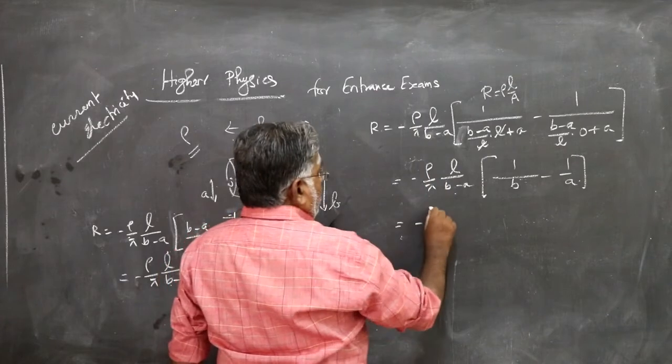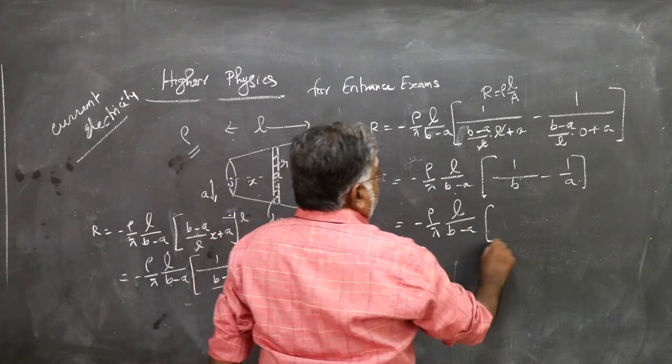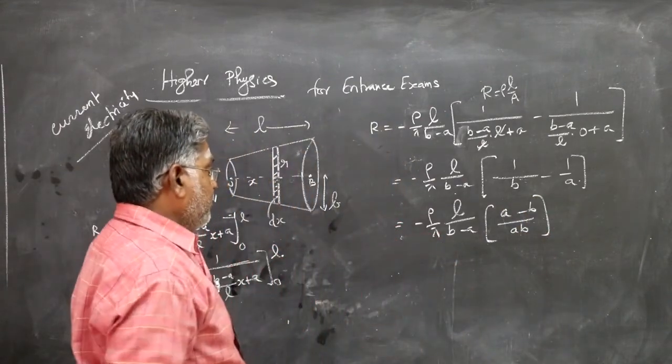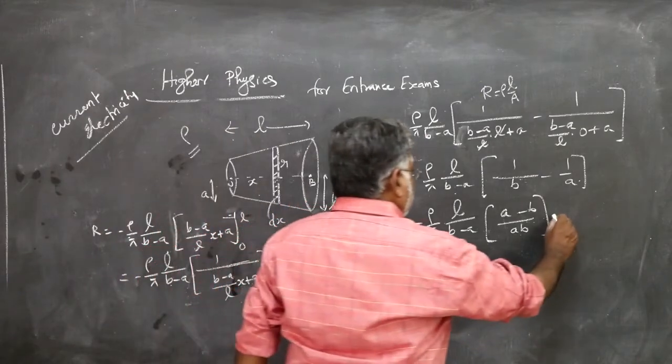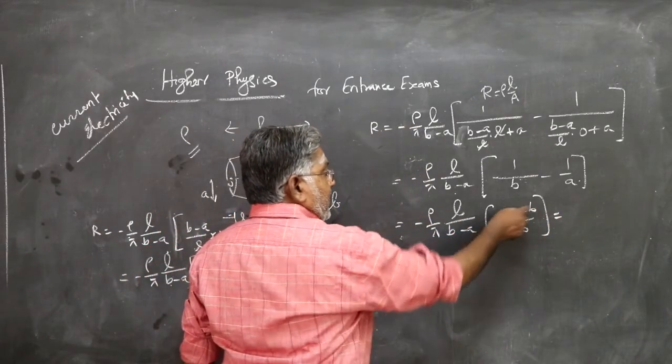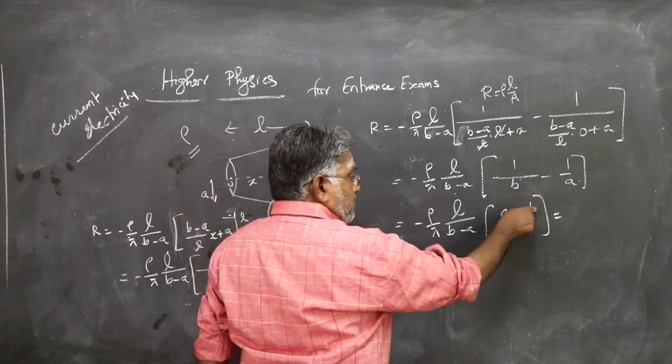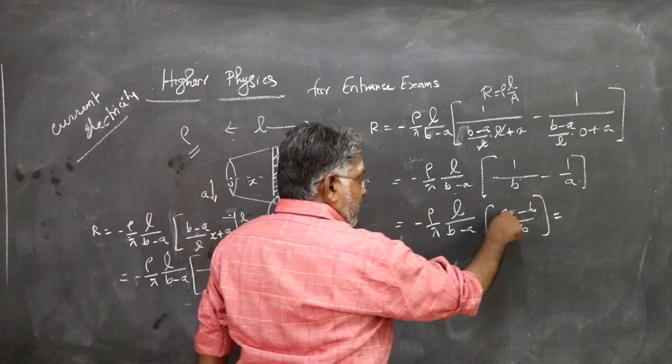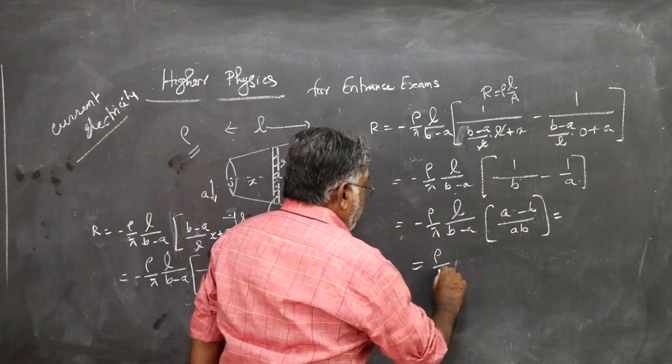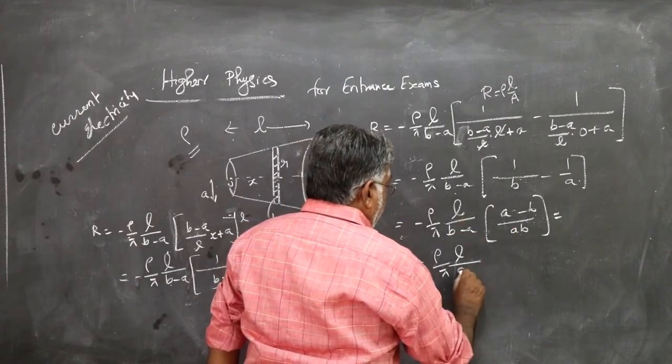Therefore, minus rho by pi L by B minus A, this is A minus B over AB. This minus you can consider with this, take it as B minus A. This minus, A minus B, becomes B minus A. That B minus A you cancel with this B minus A. So rho by pi L by AB.